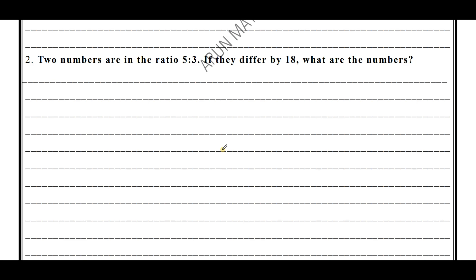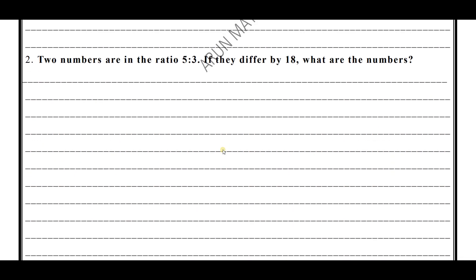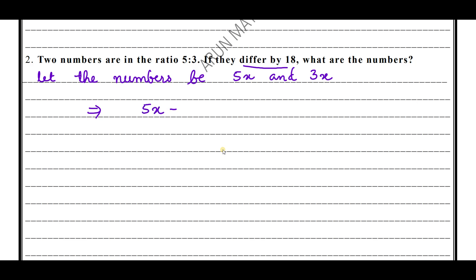Now moving to the next question. Two numbers are in the ratio 5 is to 3. They differ by 18 — meaning the difference of these two numbers is 18. What are the numbers? Let the numbers be 5x and 3x. The condition is 5x minus 3x equals 18.